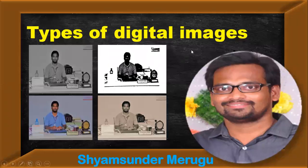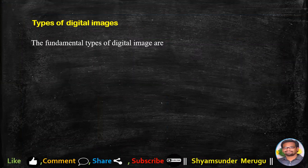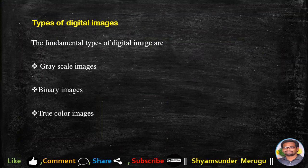Dear friend, welcome to the lecture series in digital image processing. In today's video lecture, we are going to learn the basics of types of digital images. The fundamental types of digital images are grayscale images, binary images, true color images, and pseudo color images.